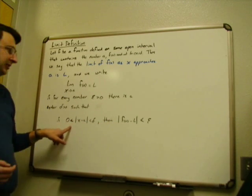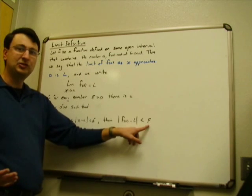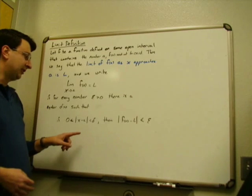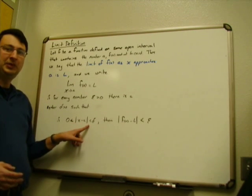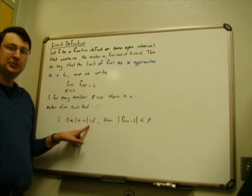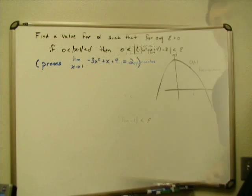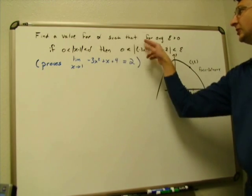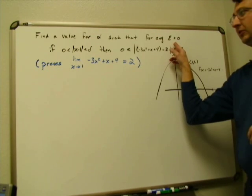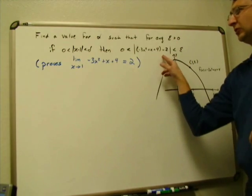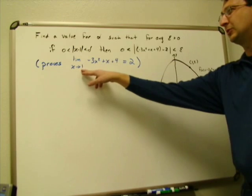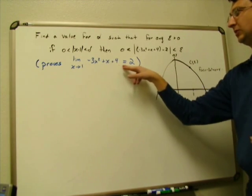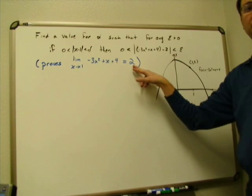We're going to use an example. I'm going to give you an epsilon — a general number bigger than zero — and go through the process to figure out what the delta band has to be based on that epsilon. We want to show that the limit as x approaches one of negative three x squared plus x plus four equals two is true.